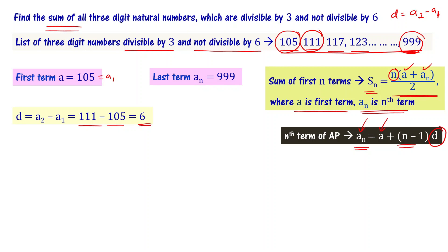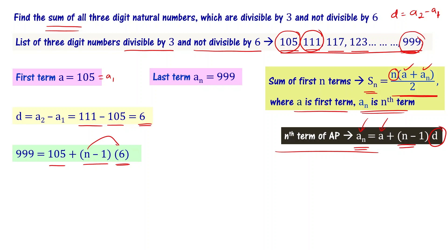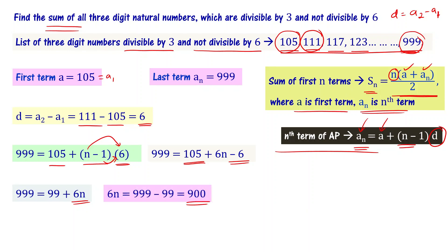Substituting into the nth term formula: an = a + (n−1)d, we get 999 = 105 + (n−1)×6, which gives 999 = 105 + 6n − 6, so 999 = 99 + 6n. Therefore 6n = 999 − 99 = 900, giving n = 900 ÷ 6 = 150. There are 150 terms in this progression.